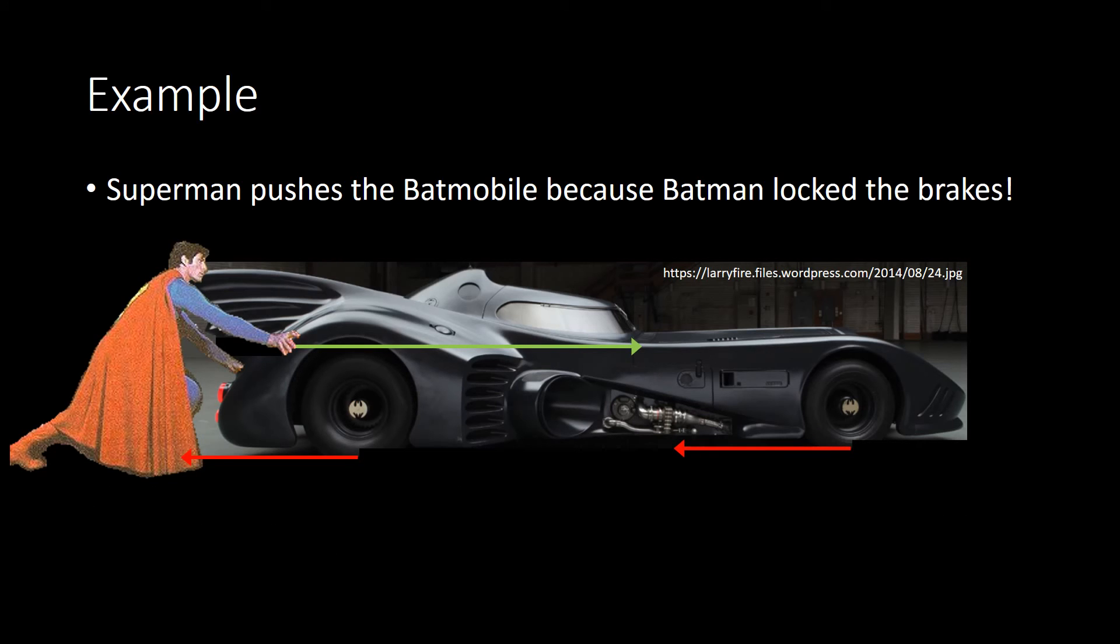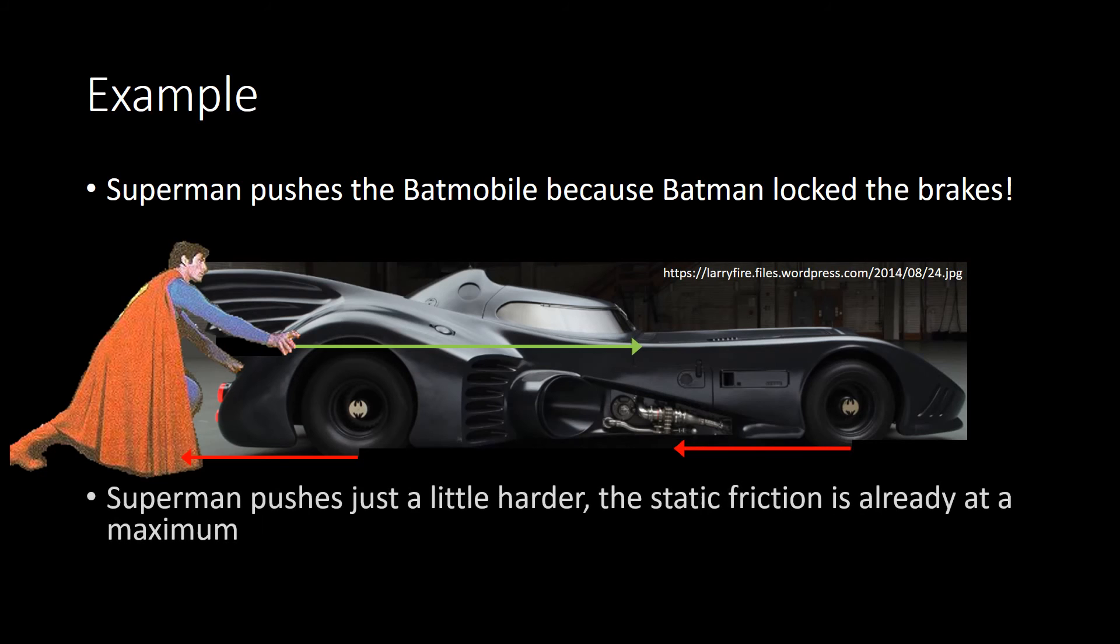Suppose Superman decides to push a little bit more, and we see that in that little increase in the arrow. Well, the static friction cannot increase any further, which means that the forces are no longer balanced. There's an acceleration to the right, and the car begins to slide.